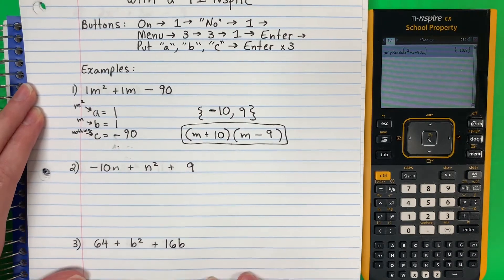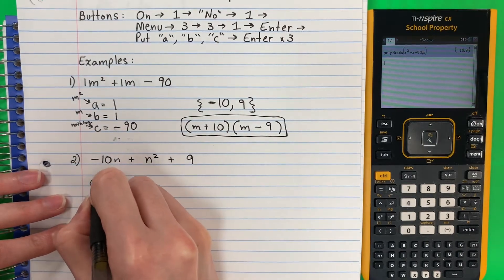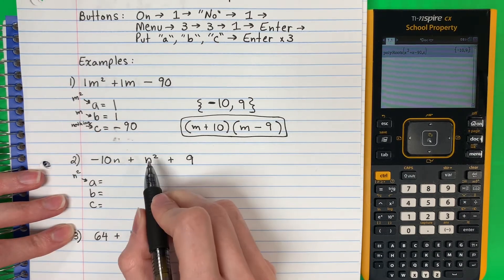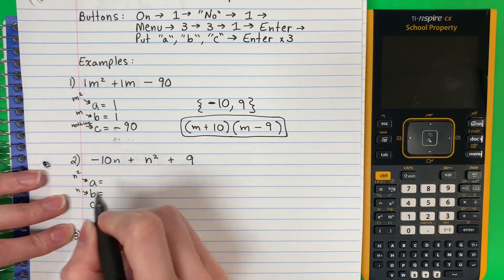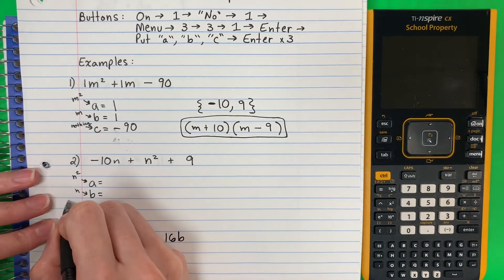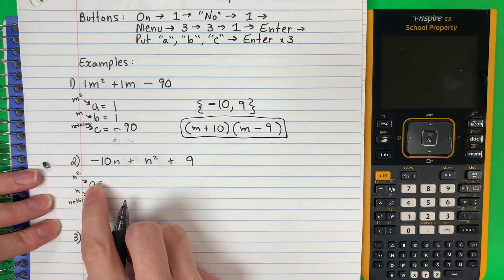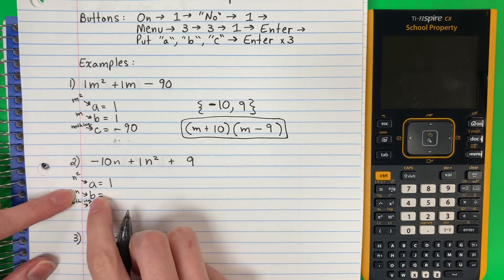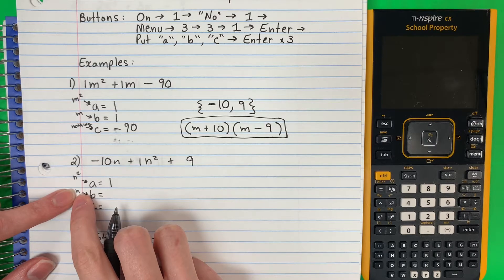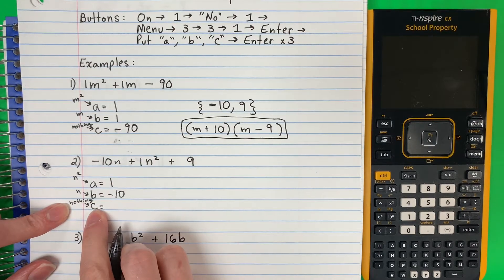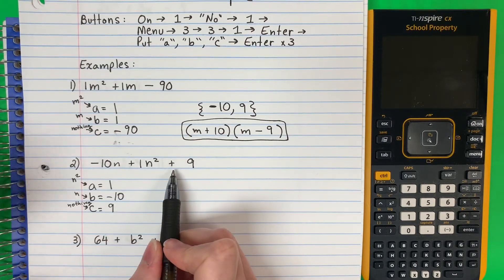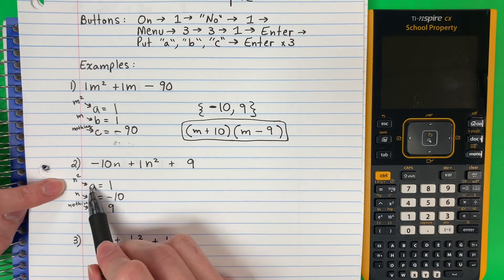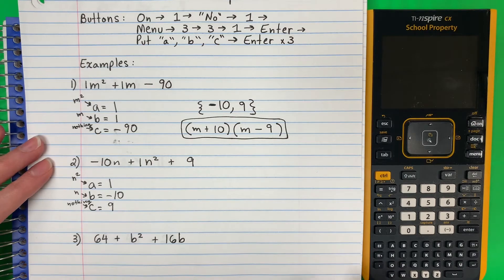Let's go ahead and try this one. I need to do ABC — A, B, C. Remember A is the number with the letter squared. B is just the letter — solamente la letra — N. And then C has no letter — sin letra — nothing, nada. So N squared is right here. What number in front if there's no number? One. So A is 1. B is the number with just the letter — negative 10. C has no letter — nine. Sometimes it's not in order — a veces no está en orden. So just remember A is not the first number. It's the number with the letter squared — es el número con la letra cuadrado.